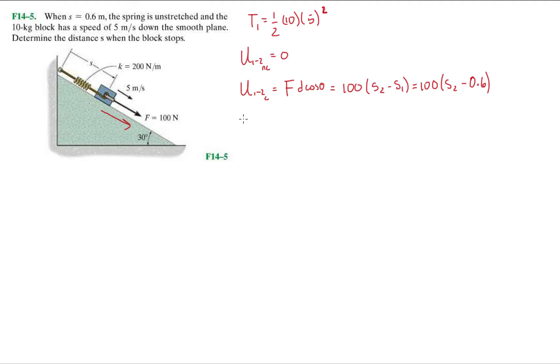All right, what else do we have? We have a spring, so we have work done by a spring. It's given to us by this equation. K, which is 200, S2 squared minus 200, S1 squared, 0.6. So even at rest, because S1 is not 0, it's 0.6, even at rest, there's work being done on the object already.